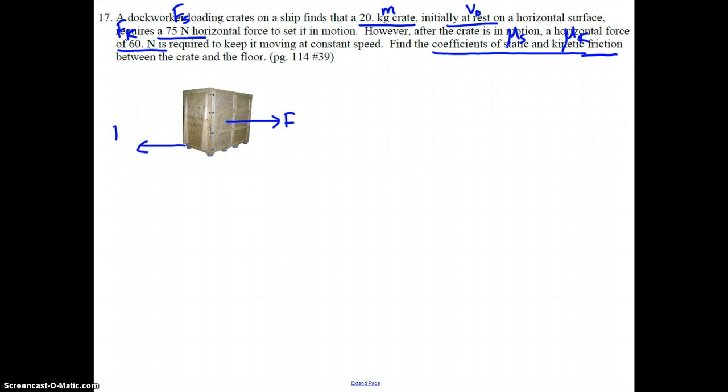Quick little free body diagram on our crate here. We're going to have a force forward. We're going to have our friction backward. And that friction is either going to be static to just get it moving, or it's going to be kinetic to keep it moving. We have the weight of the crate down, and we have the normal force of the floor pushing back up on the crate.